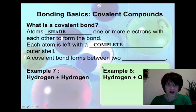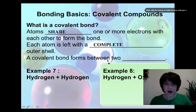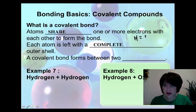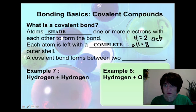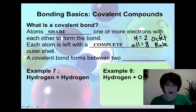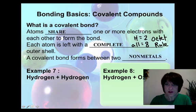When they share, that leaves each atom with a complete outer shell. So the valence electrons for hydrogen have to get to 2, and for all others, they would want to get to 8. Remember the octet rule — every atom needs 8 electrons. A covalent bond, then, would form between two nonmetals.